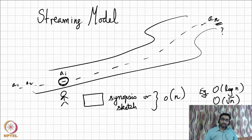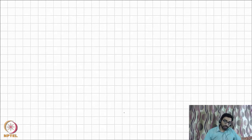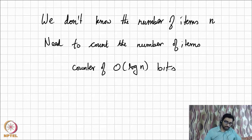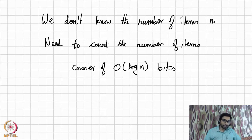Let's jump into a problem. Say we are getting a steady stream of items and we don't even know how many items are in the stream, but we want to count the number of items. This is quite easy because all we need is a counter of O(log n) bits — with that we can count n accurately. The challenge is: think of a situation where n is very large and you want to count using very few bits. This could happen in embedded systems that see a lot of data but are designed to work in resource-constrained contexts where memory is at a premium.